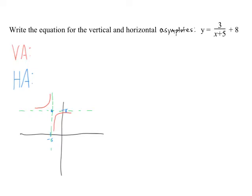Hopefully you can see your vertical asymptote is the one that goes up and down, which is at negative 5. Is that an x equals negative 5 or a y equals negative 5? You should know it's x equals negative 5. And your horizontal is side to side, and that would be at 8, when y equals 8. Just be careful that you put the x and y in the right spots — it helps to make a quick sketch.